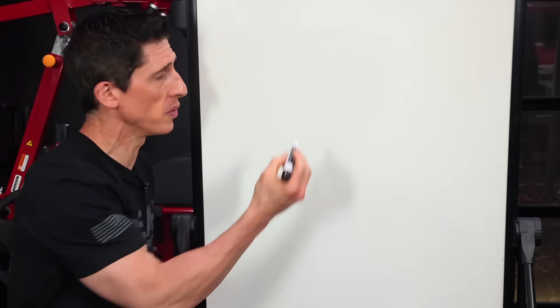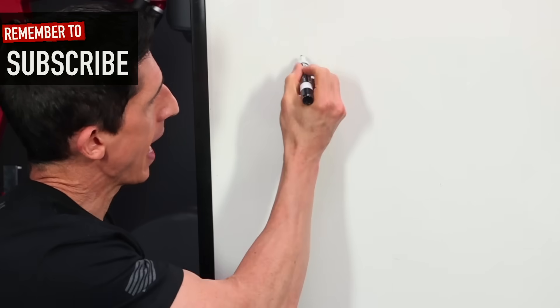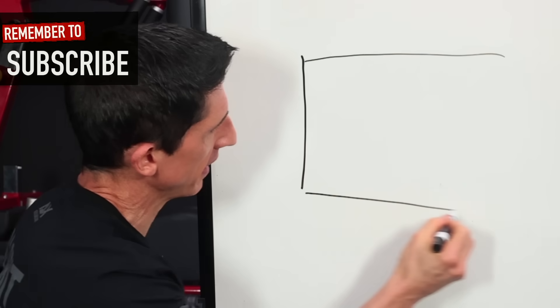What's up, guys? Jeff Cavaliere, ATHLEANX.com. So, if you want to build muscle, you're going to have to use light weights. I promise you. And I'm going to prove that to you here today with the use of a couple of muscle markers and some first grade drawing skills and a third grade knowledge of farming. And I apologize ahead of time. Like I said, third grade is about where I'm topped out in farming. And there's a lot of people that know a lot more than me, but I will parallel the two so you understand exactly how to build muscle and why those light weights are needed.